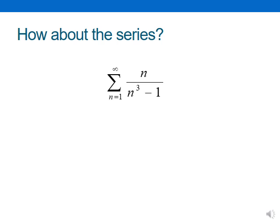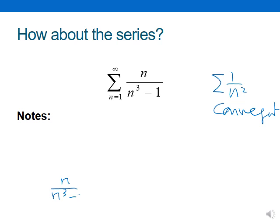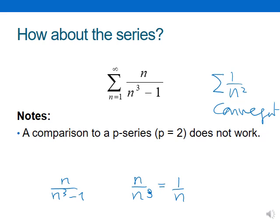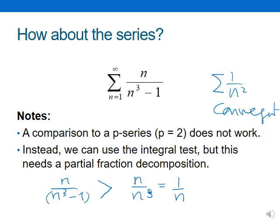If you consider this series n over n cubed minus 1, which we are going to compare with a p-series 1 over n squared, where p equals 2 — this is a convergent series. However, the terms of n over n cubed minus 1 compared with 1 over n squared: since the denominator n cubed minus 1 is less than n cubed, this term is bigger. So I'm comparing my series with a convergent series and the terms are larger — it's useless to apply the comparison test here.